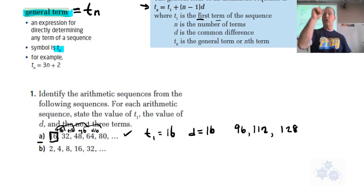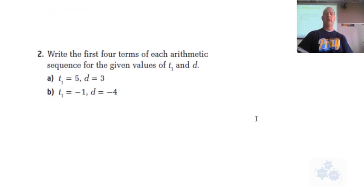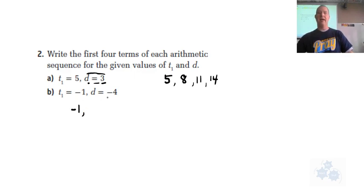Let's do number 2. Write the first four terms of each arithmetic sequence for the given values of T1 and D. T1 is 5, so that's going to be the first term is 5. The difference is 3. So the next one's going to be 8. The next one's going to be 11, and the fourth term we've got 14. If you have a negative number, don't fret. You write that negative number down, that's your first term, and then a difference of negative means that you subtract or you add the negative. So this is actually going to be negative 1, negative 5, negative 9, and negative 13.